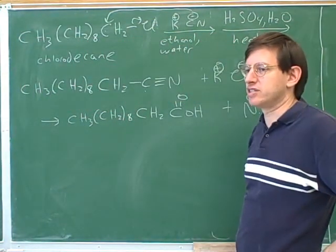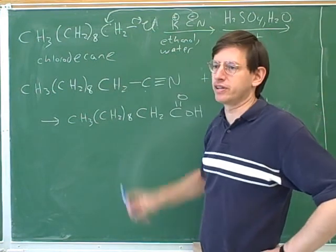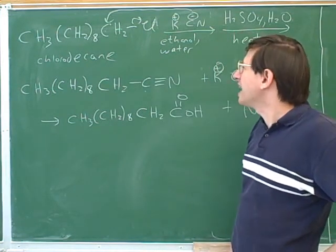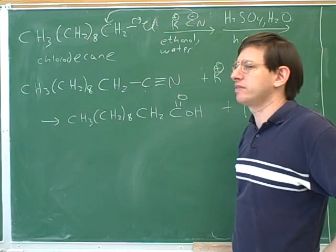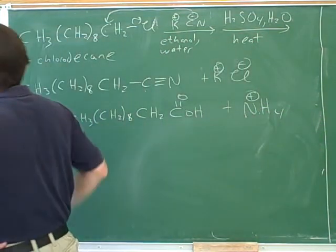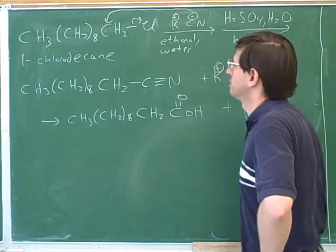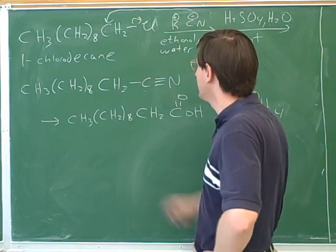We name halogens just with prefixes. Halogens never get suffixes, even if they're the only functional group. That's just the convention. And the chlorine could have been theoretically on any of these carbons. So we have to say it's one chlorodecane. Right. That's just going back to an earlier term of nomenclature. One chlorodecane.